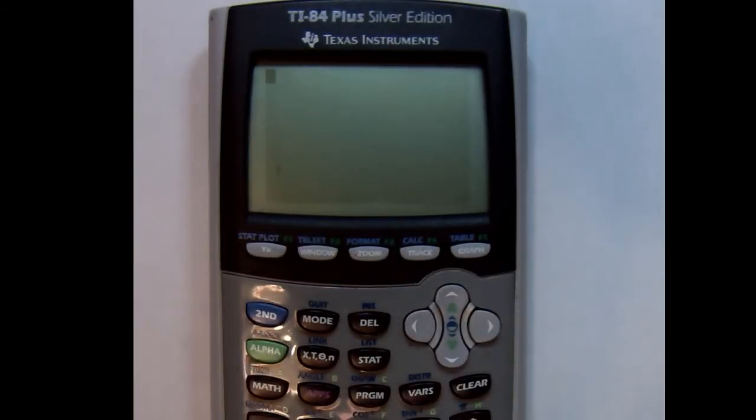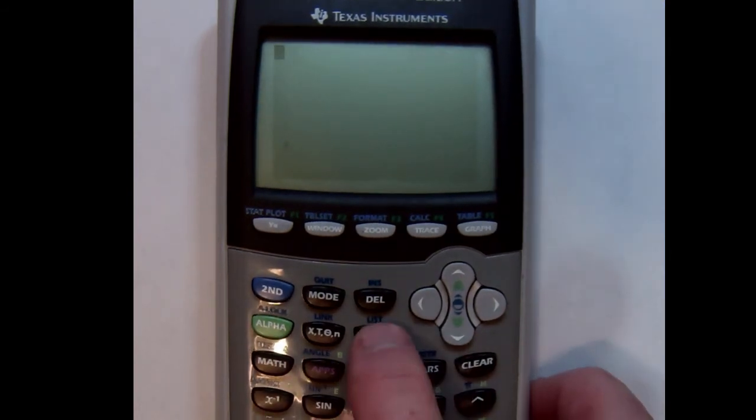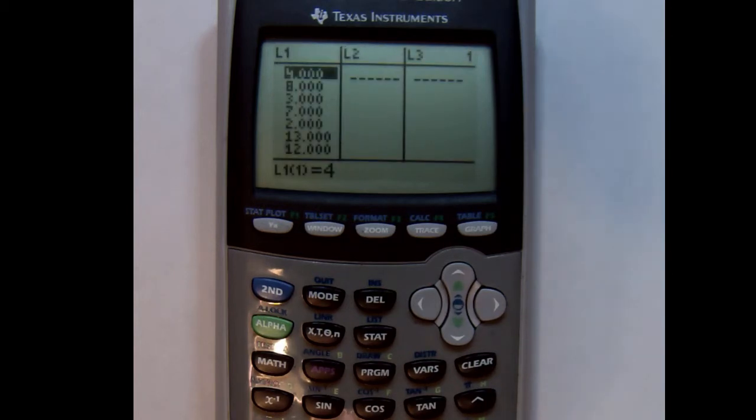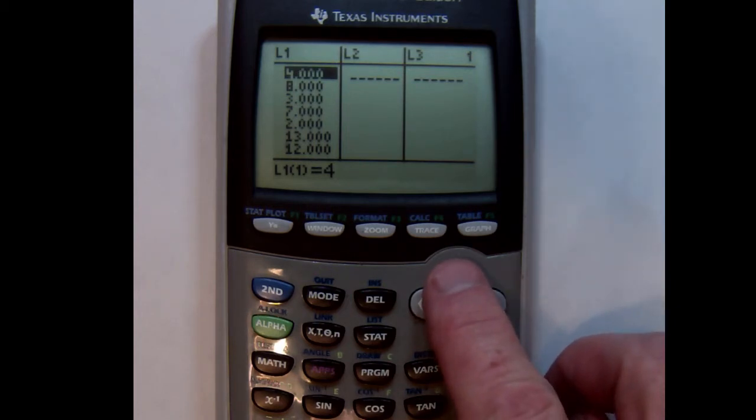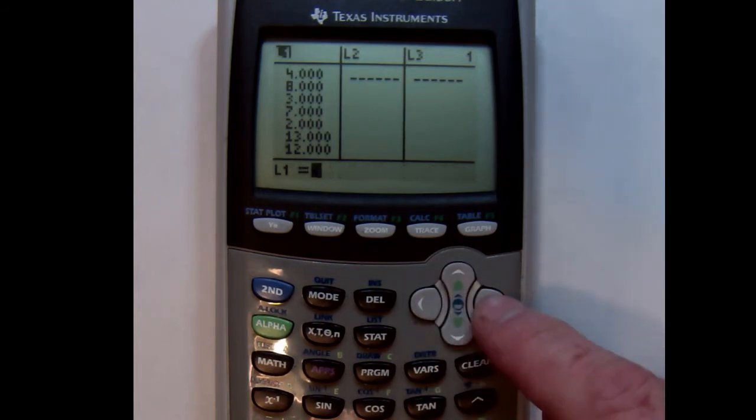So watch this: the mean, standard deviation, and actually a few other things. The first thing to do is enter the data. So go right here to STAT and then EDIT. So just hit enter or number one, and I happen to have some numbers left over from some other projects. I'm going to clear those out. So what you do to clear numbers out is go to the top of the list and use this button right here, CLEAR. Then when you move down, it's cleared out.